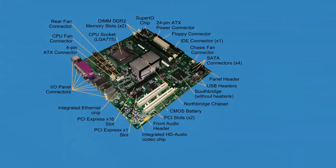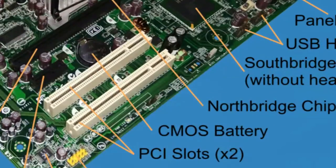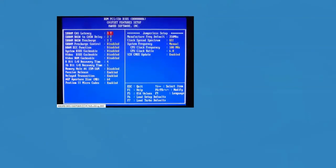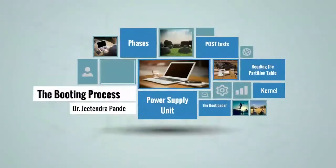The BIOS first takes the memory frequency and attempts to set it on the memory controller. Next, the BIOS multiplies the memory frequency by the CPU frequency multiplier — this is the speed at which the CPU is set to run. Sometimes it is possible to overclock a CPU by telling it to run at a higher multiplier than it was designed to, effectively making it run faster. There can be benefits and risks to doing this, including the potential of damaging your CPU.